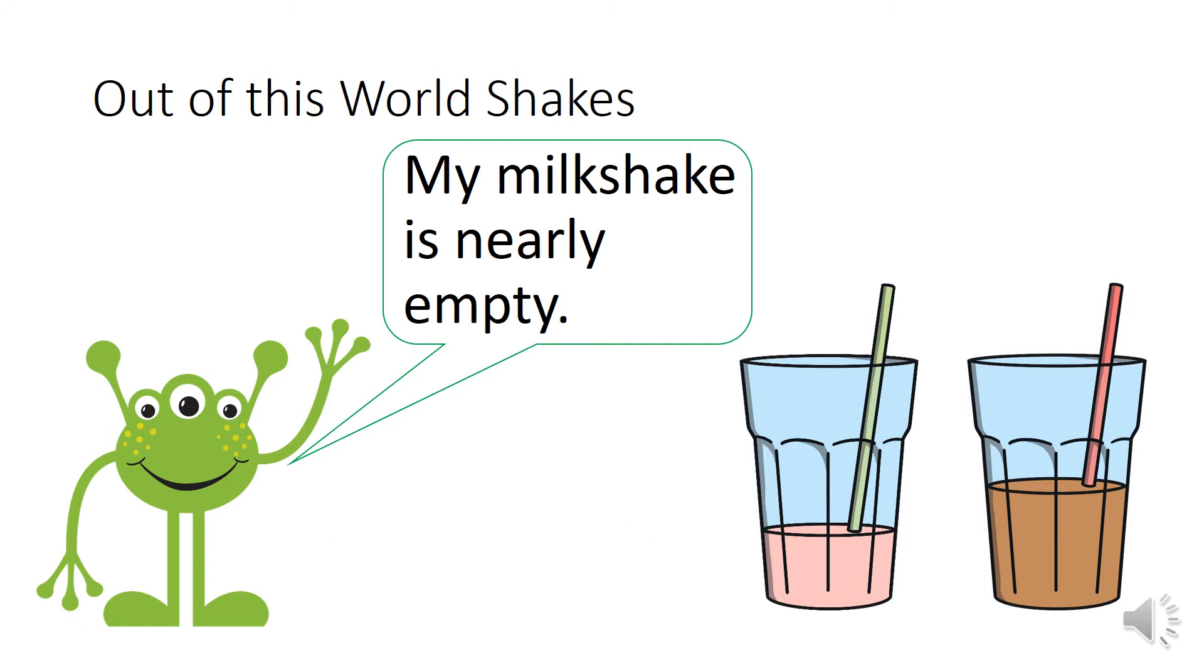Well done. It is the strawberry one because the liquid inside is closer to the bottom. It's not halfway, it's not at the top, and it's not completely empty. The brown glass is showing as half full or half empty because the liquid is halfway up the glass.